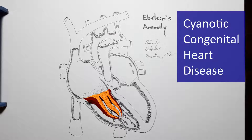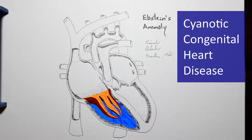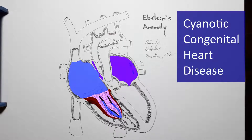Some of the ventricular pressure during systole is back-flowing and spilling over to the right atrium. This will cause the right atrium to have higher pressures than normal and, most importantly, higher pressures than the left atrium.